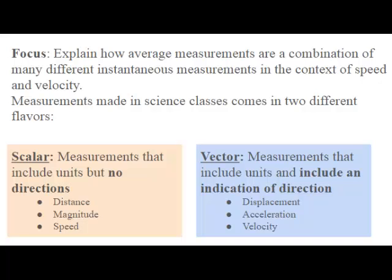Now measurements made in science classes can come in two different flavors. In the pink box we can talk about scalar, which to be honest is probably the numbers that you've been dealing with since kindergarten. Scalars are measurements that include units but really don't talk about directions. The most common one is distance. And so when we talk distances, we talk about things like 48 miles or 2.08 centimeters.